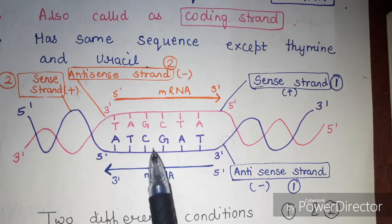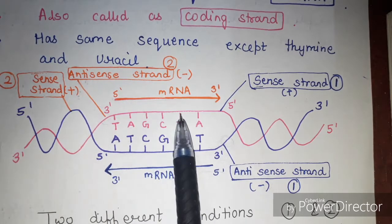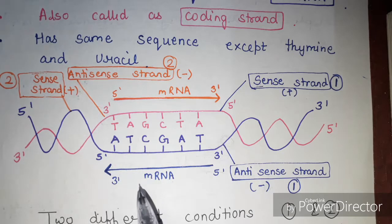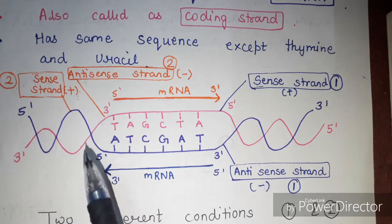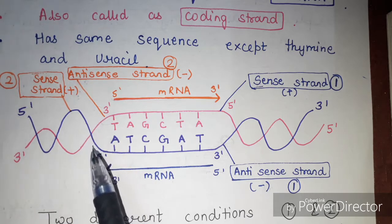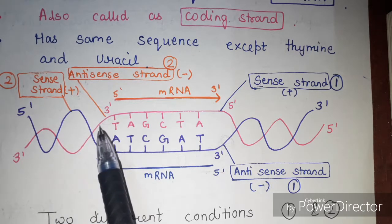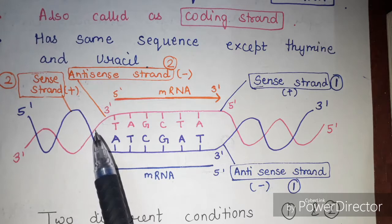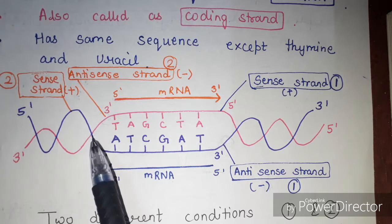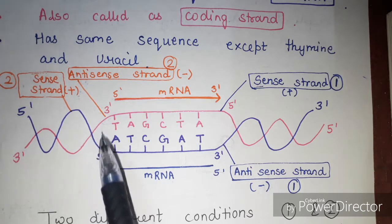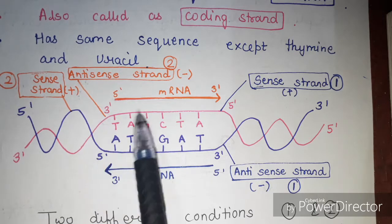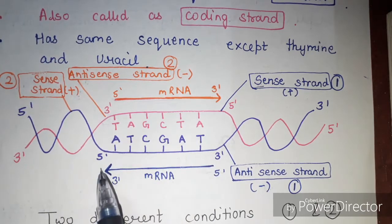The antisense strand is always the strand from which mRNA is formed. The other strand is called the sense strand. The name — sense or antisense — depends on the promoter region. DNA has a specific sequence called the promoter where RNA polymerase binds, and then the transcription process starts, forming mRNA. That is the difference between the sense and the antisense strand.